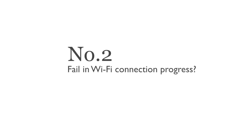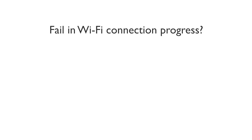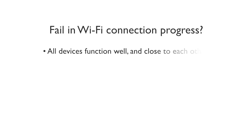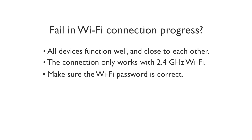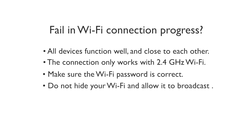Number 2: fail in Wi-Fi connection progress. If you fail in Wi-Fi connection progress, make sure your router network and smartphone function well and are close to your bulb. Make sure the connection is under 2.4 GHz Wi-Fi network. Make sure the Wi-Fi password you entered is correct. Make sure your Wi-Fi is not hidden and allowed to broadcast. Try removing some devices from your router to reduce the network load.